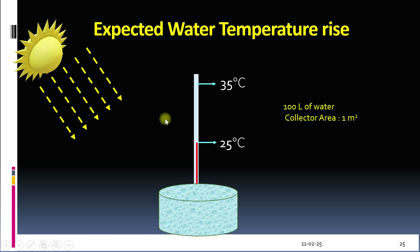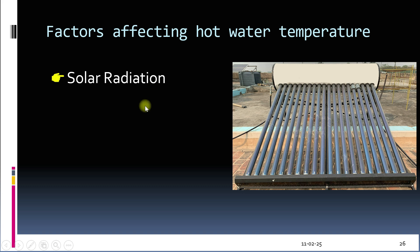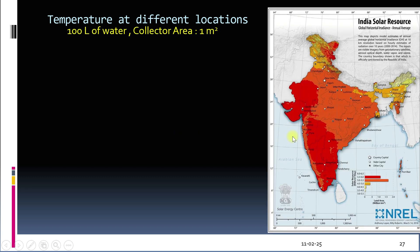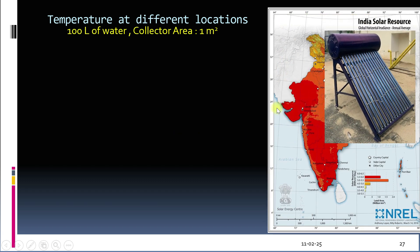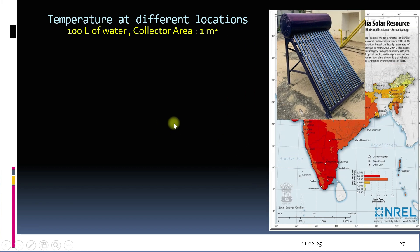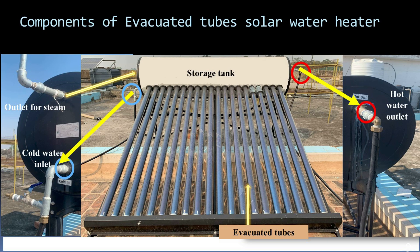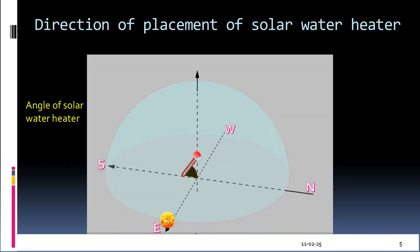The temperature of hot water depends upon several factors. Number one is solar radiation. Number two is temperature of incoming water. Number three is size of the collector area. Solar radiation varies depending upon your location. Areas near the tropics receive more sunlight than other parts of the world. On average, you can expect a temperature rise of 25 to 35 degrees Celsius per square meter of collector area for 100 liters of water in one day. Larger collector areas and optimal angles can result in even higher temperatures.